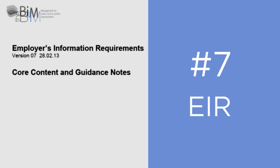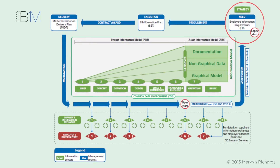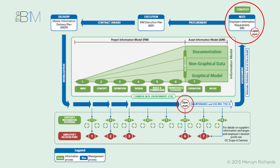Sitting at number seven is EIR, which stands for Employers Information Requirements. Right at the outset, clients or employers set out the information they will require in this document. It will state what they need at key stages of the project to make decisions, and what they'll need at handover to operate their new asset at an optimum level. It's important that this document is in place so project teams know what graphical and non-graphical information is needed and when.